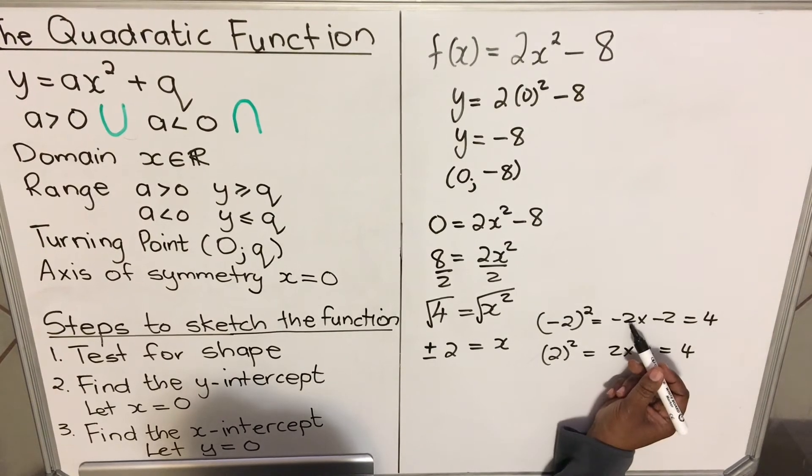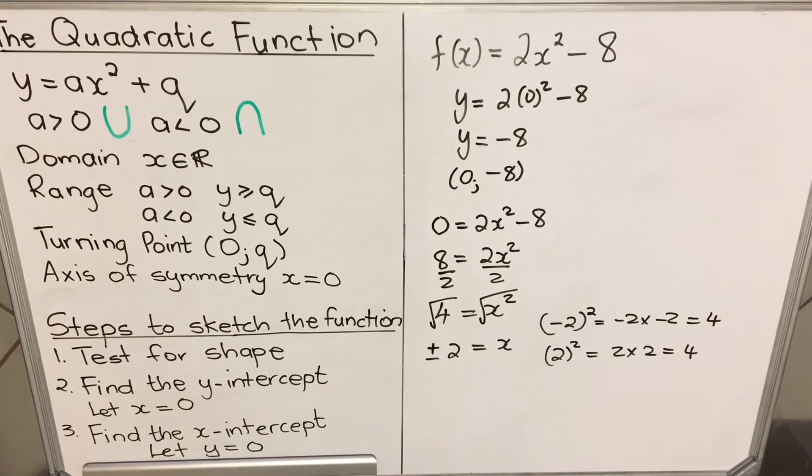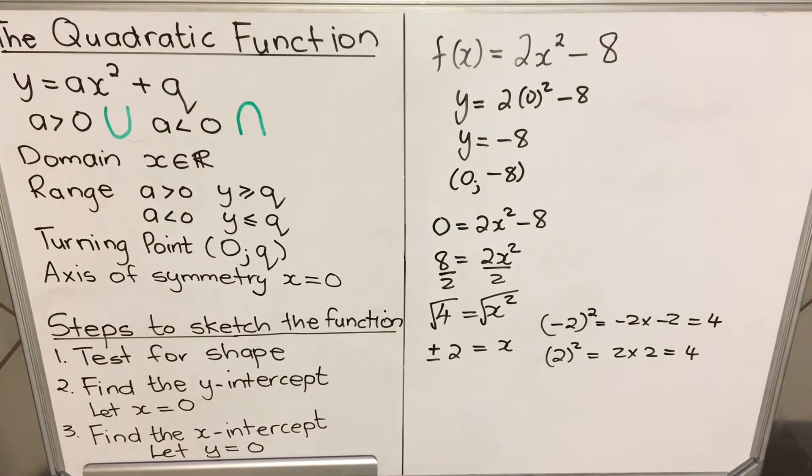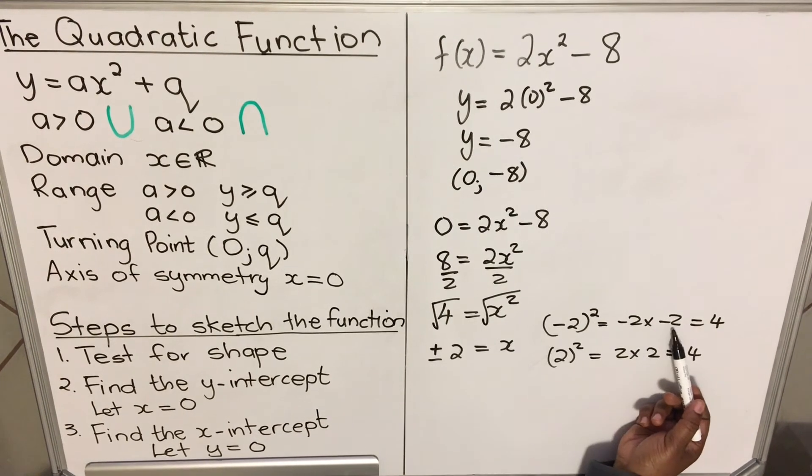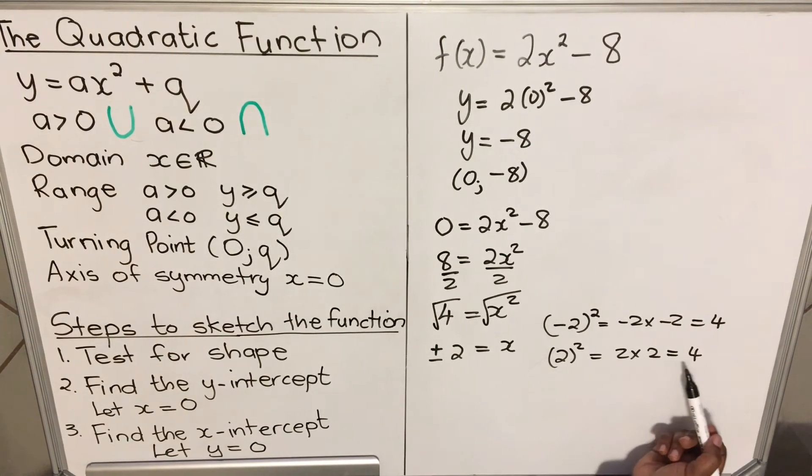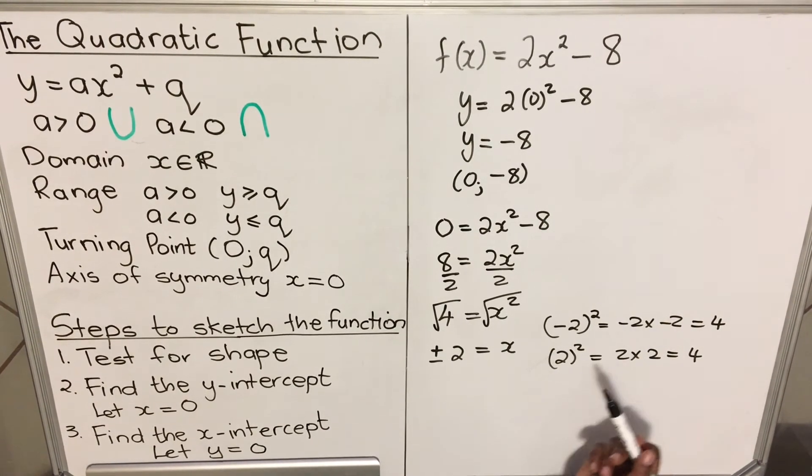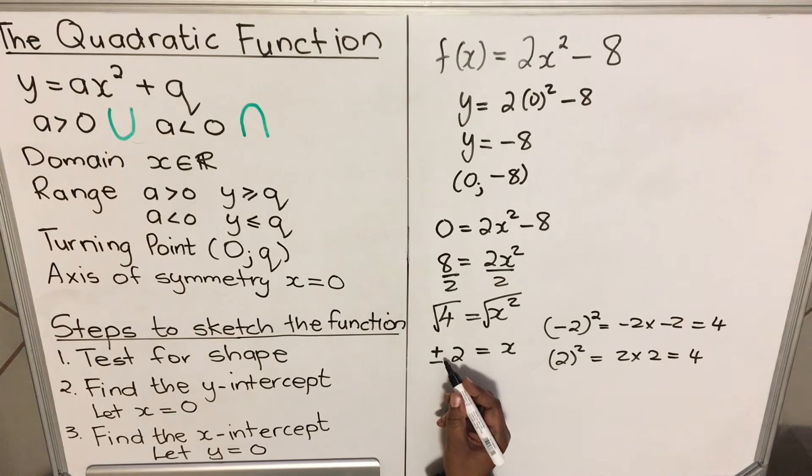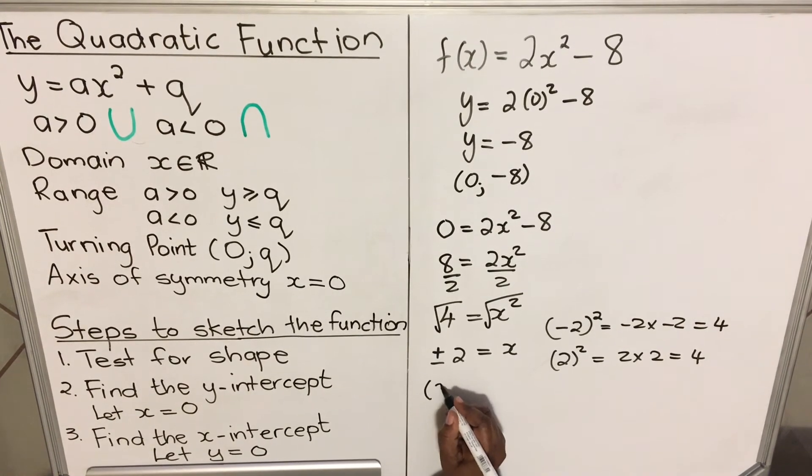A square root—you're asking yourself which number do I multiply to get a 4. So if I multiply negative 2 and negative 2, I'll get a 4. But also when I multiply 2 and 2, I get a 4. So both of them are correct. So your answer here: your x can be positive 2.